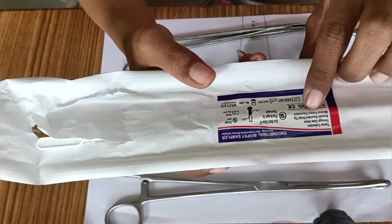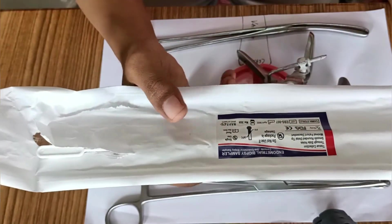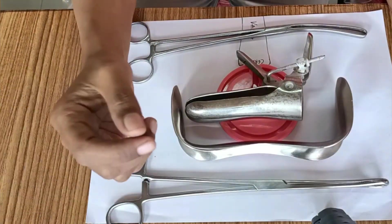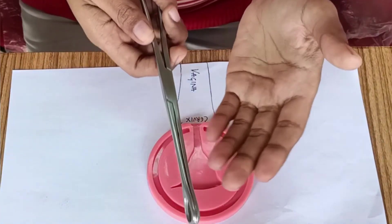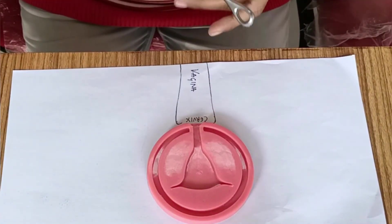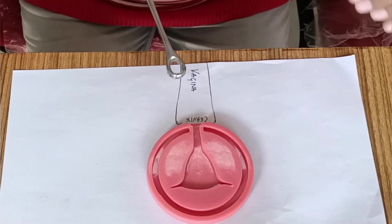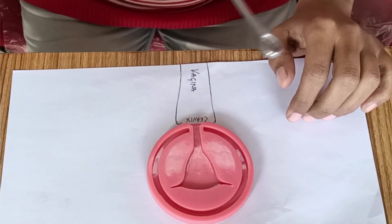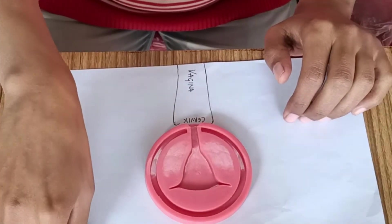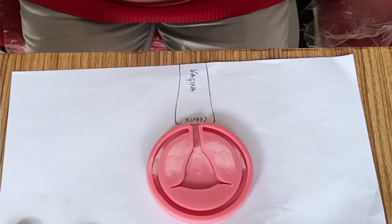Now let's begin with the procedure. The patient is lying in lithotomy position and we require sponge holding forceps to clean the patient. First clean the perineum and then move outwards, and also clean the inside of the vagina and the cervix. After cleaning, drape the patient.